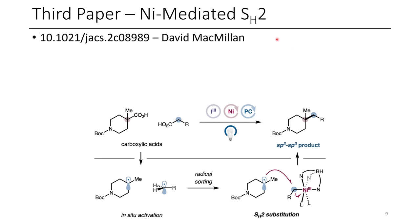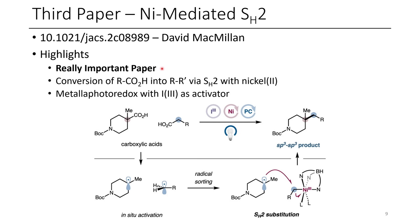The next paper is the nickel-mediated SH2 reaction. This is a really significant paper that you should definitely pay attention to. The highlights include the conversion of carboxylic acids into new carbon-carbon bonds via SH2 with Ni(II) as the catalyst. SH2 is like SN2, but it's a radical-type substitution where one of the radicals is stabilized to a metal center — in this case, nickel. This also involves metallaphotoredox with iodine(III) reagents as activators.